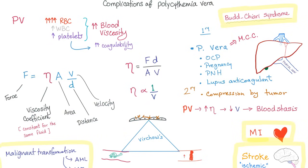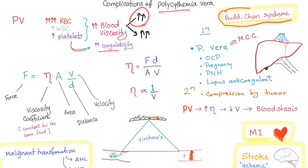Pay close attention to complications. Myeloproliferative disorder leads to increased blood viscosity due to increased blood cell count, and increased coagulability from platelets. One complication is Budd-Chiari syndrome — thrombosis of the hepatic veins (not the portal veins), leading to liver congestion, splenomegaly, and portal hypertension. The most common cause of Budd-Chiari syndrome is polycythemia vera.